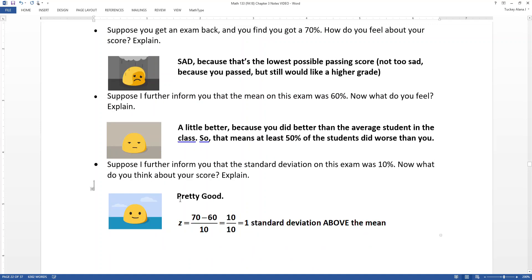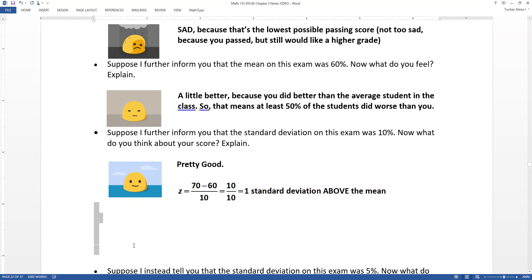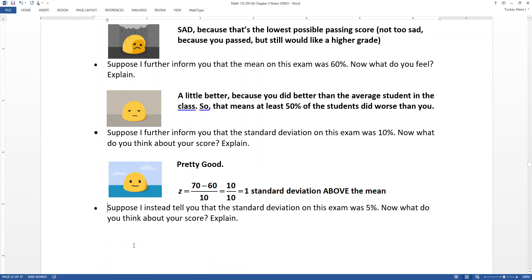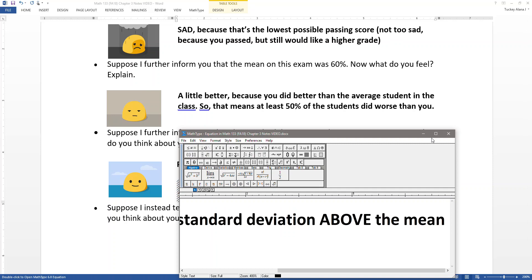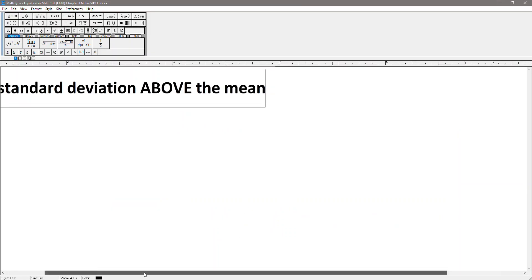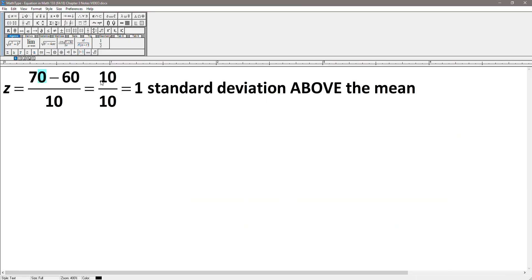And there you've just done your first Z score calculation. Even if you did it in your head, you still did it. Right? Which is that you take your score, which was 70, you subtract away the mean, which was 60, and you divide that number by 10, which was my standard deviation.